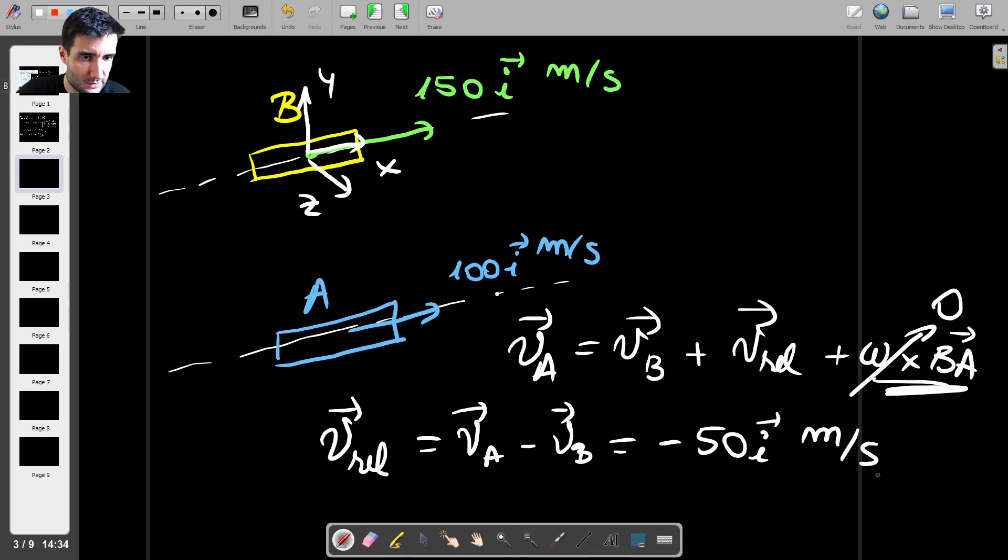So that's really interesting, and it tells us that if the two aircraft are flying side-by-side in straight lines with 100 meters in between them, like this, then, as long as they're flying in a straight line, the pilot of aircraft B will see the aircraft A traveling backwards with a speed of 50 meters per second, which is easy to understand.